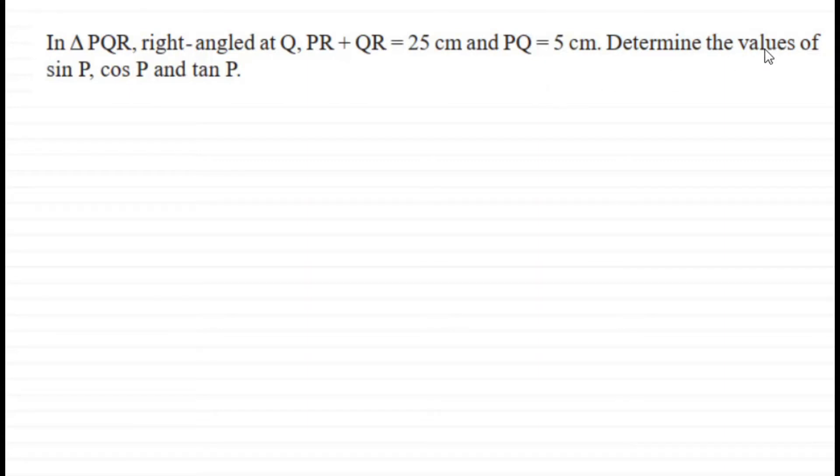Here we have another question from Exercise 13.1. In triangle PQR, right-angled at Q, PR plus QR equals 25 cm and PQ equals 5 cm. Determine the values of sin P, cos P, and tan P.